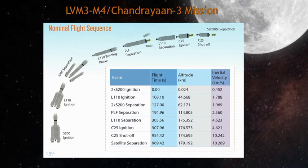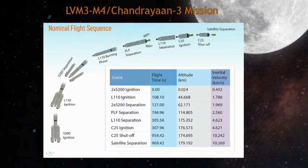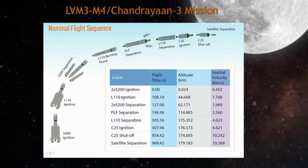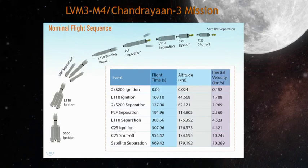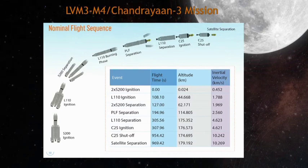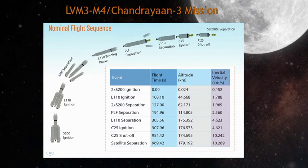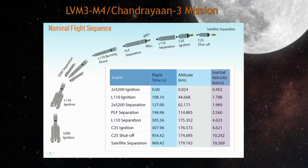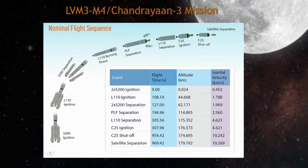The core L110 stage is air-lit 108 seconds into the flight, while the rocket is at an altitude of 45 km. The S200 strap-ons and L110 will thrust together for the next 20 seconds.